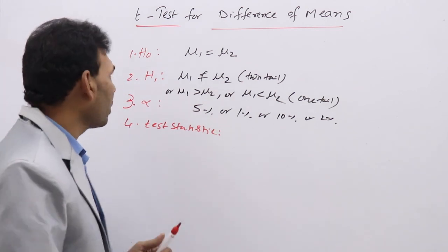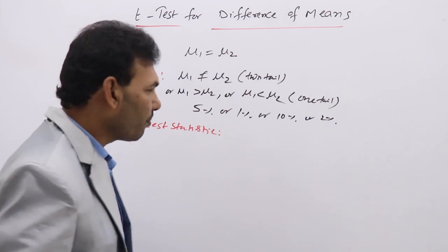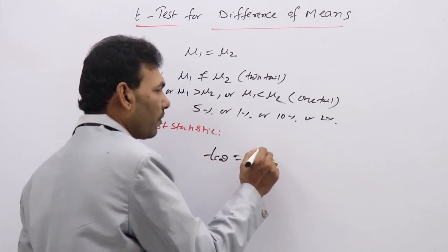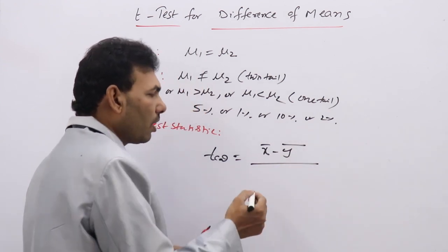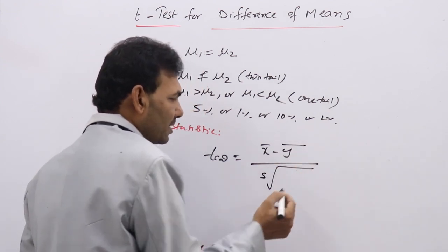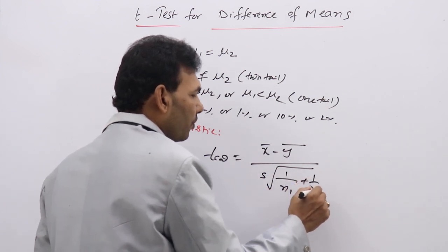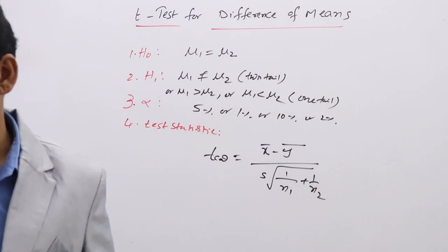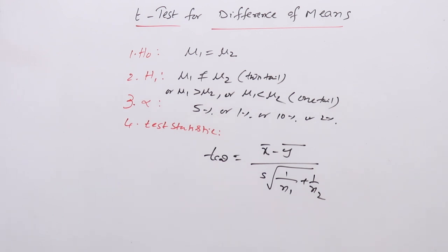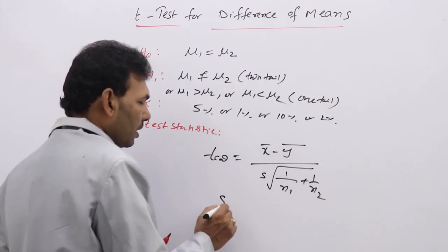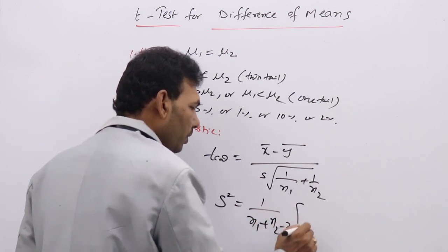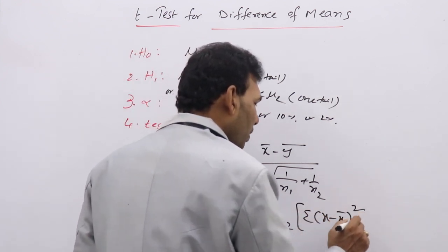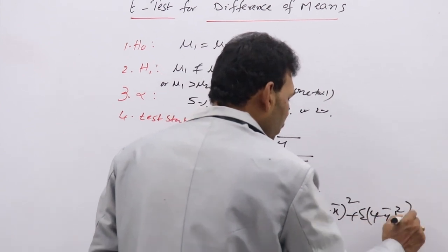Coming to the test statistic, the formula to calculate difference of means: T calculated equals X-bar minus Y-bar divided by S times the square root of (1/N1 + 1/N2), where S² equals 1/(N1 + N2 − 2) times (Σ(X − X̄)² + Σ(Y − Ȳ)²).